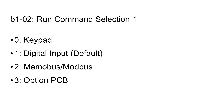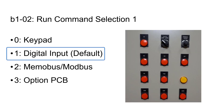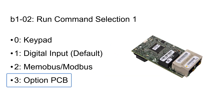There are four options. Setting 0 is the keypad. Setting 1 is a digital input, such as switches or buttons. Setting 2 is MemoBus/ModBus. And setting 3 is the communication option card, such as the Ethernet card, to receive commands over a network.